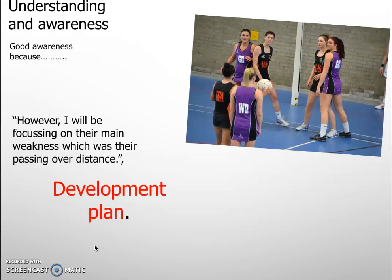Pause the screencast or go back over it to review each section. The key things are: say what you see, ensure you have three strengths and three weaknesses for each of the three sections — fitness, skills, and tactics — and always state the impact on performance. If you do that, you can confidently approach the strengths and weaknesses section of your EPIP. In the next screencast we'll be looking at the development plan.